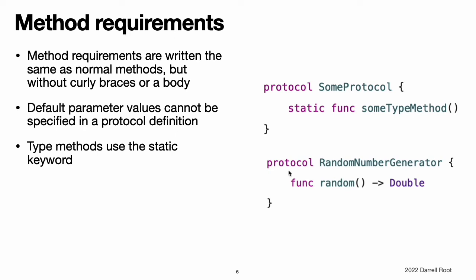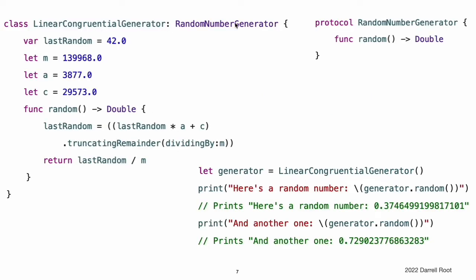This example defines a protocol with a single instance method requirement. This protocol, random number generator, requires any conforming type to have an instance method called random which returns a double value whenever it is called. Although it is not specified as part of the protocol, it is assumed that this value will be a number from 0.0 up to, but not including, 1.0. The random number generator protocol does not make any assumptions about how each random number will be generated — it simply requires the generator to provide a standard way to generate a new random number. Here is an implementation of a class that adopts and conforms to the random number generator protocol, implementing a pseudo-random number generator algorithm known as a linear congruential generator.